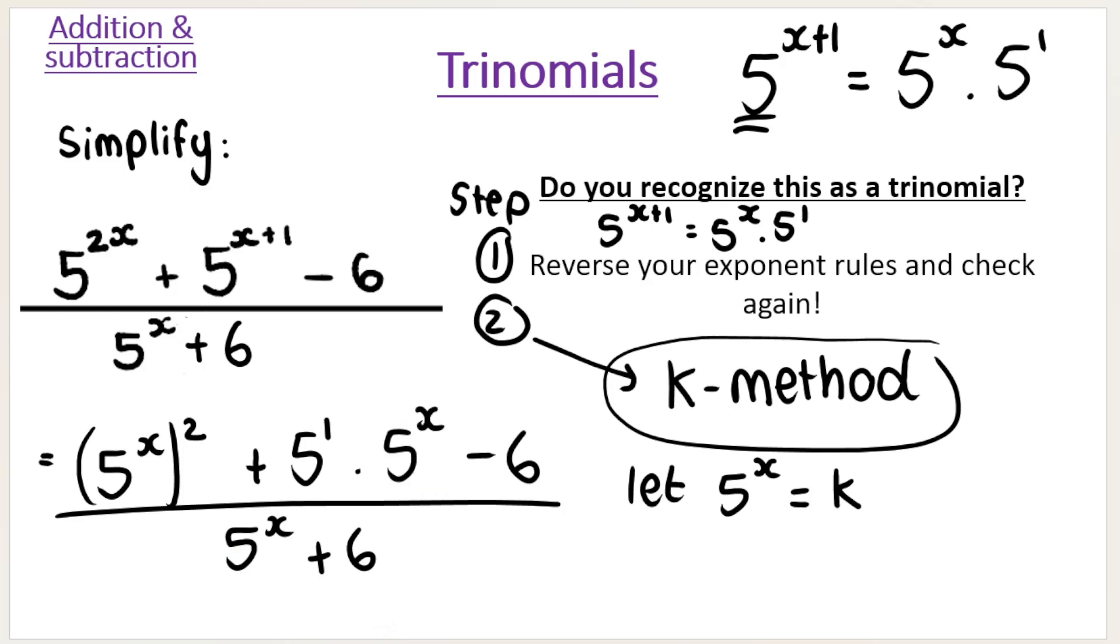Or you can think of it as the term with the exponent that is half the exponent of the other term. Now, what do I mean by that? You can see this is a X and this one over here is a 2X. So I'm going to let 5 to the power of X equal K.